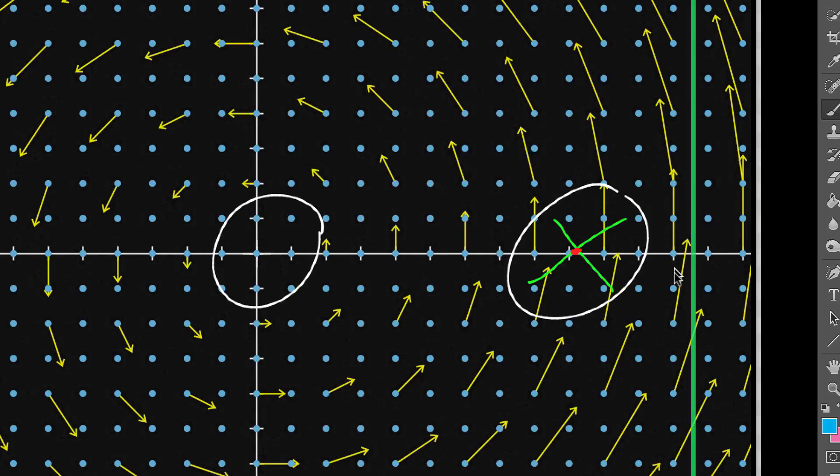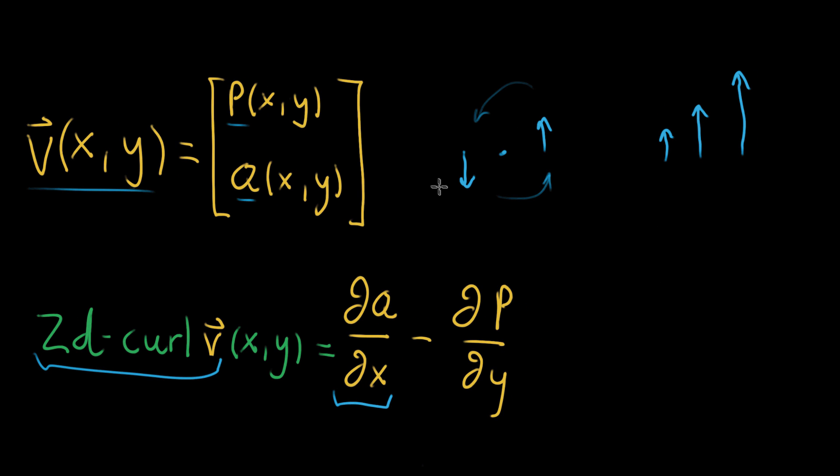And in terms of the formula, this is because a situation like this one here, where Q goes from being negative to zero to positive, should be treated just the same as a situation like this, as far as 2D curl is concerned. Because this term in the 2D curl formula is going to come out the same for either one of these.